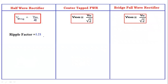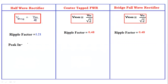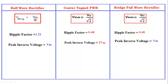The ripple factor of the half wave rectifier is 1.21. The ripple factor of the center tapped full wave rectifier is 0.48, and for the bridge full wave rectifier it is also 0.48. For peak inverse voltage: the half wave rectifier has PIV = Vm, the center tapped full wave rectifier has PIV = 2Vm, and the bridge full wave rectifier has PIV = Vm.